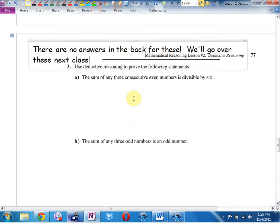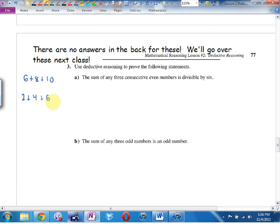Number three, there are no answers in the back for these. We will go over these next class. So the answers for one and two are in the back. These are tough. If you can't get these, do not despair. It means you're normal. See if you can prove the sum of any three consecutive even numbers is divisible by six. Now what are consecutive even numbers? Six plus eight plus ten. Or two plus four plus six. By the way, what is two plus four plus six? Twelve. Does six go into twelve? What is six plus eight plus ten? Twenty-four. Does six go into twenty-four? Apparently it always will. Prove it.